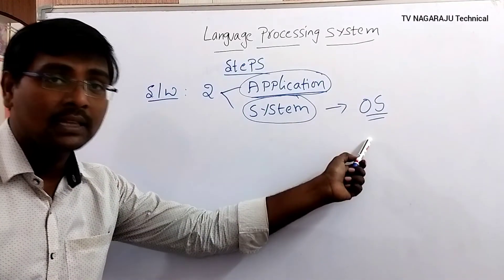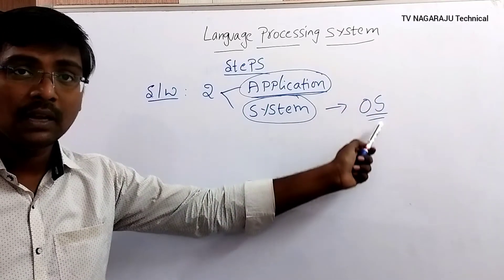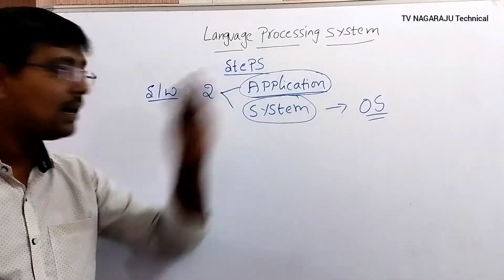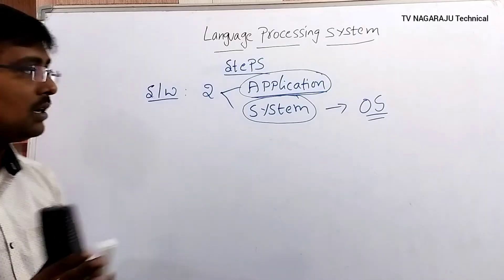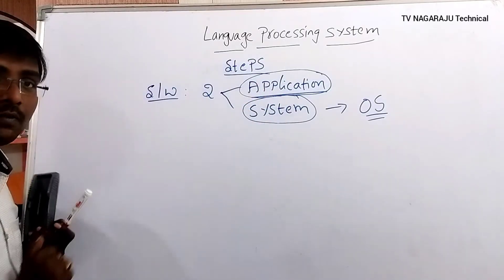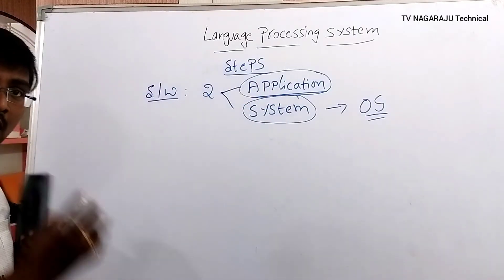Compilers, debuggers, assemblers, and operating systems are different types of system software.